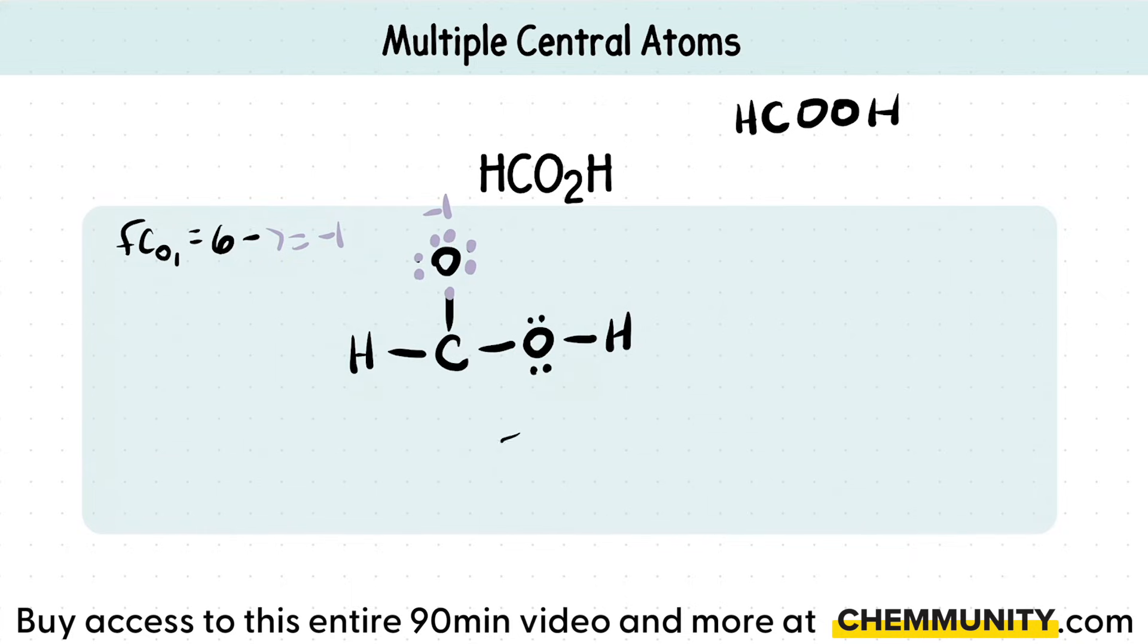I'll do the formal charge for the second oxygen now. So that's six valence electrons minus however many we actually have. So one, two, three, four, five, and six. That has a formal charge of zero.